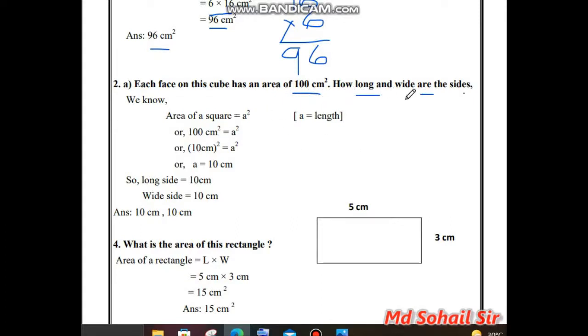This says that each face on this cube has an area of 100 cm². How long and wide are the sides? For example, they didn't give the picture so I'm trying to tell you. For example, this is a cube. This is a cube. So for this cube, they're telling that one face is 100 cm². This face is 100 cm². It means this is the area.